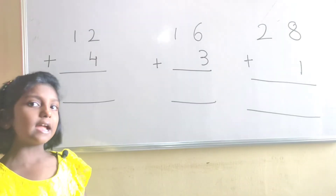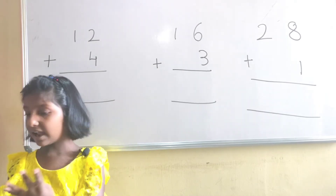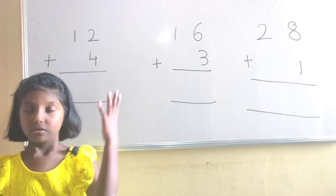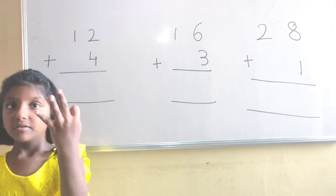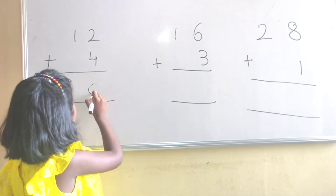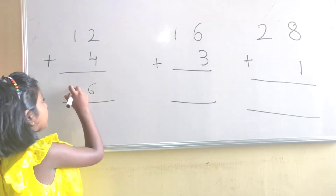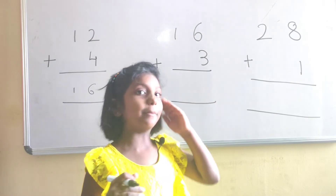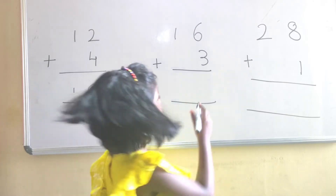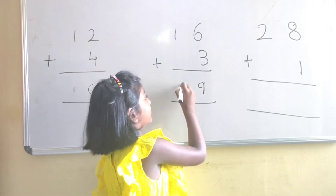Start adding from the right side. 2 in mind, 4 in hand. 2, after 3, 4, 5, 6. The answer is 6. Here there is no number to add, so I am writing the first number. 6 in mind, 3 in hand. 6, after 7, 8, 9. The answer is 9. Here there is no number to add, that's why I am writing 1.